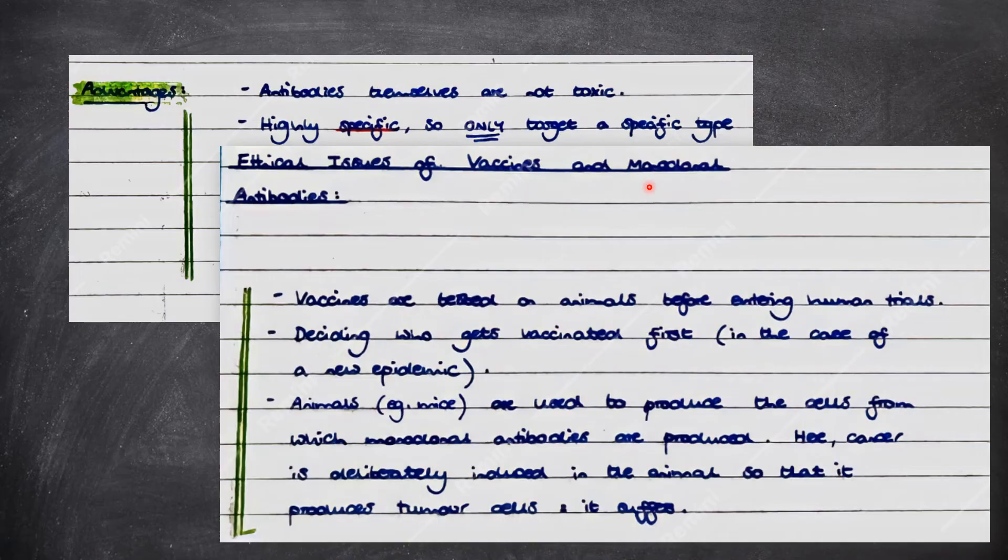However, the spec also wants us to consider ethical issues surrounding the use of monoclonal antibodies as well as vaccines. So, vaccines are tested on animals before entering human trials, and therefore the animals may suffer in the process. Also, deciding on who gets vaccinated first in the case of a new epidemic.